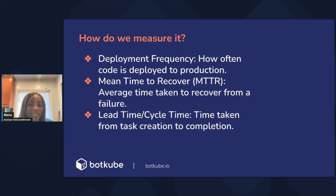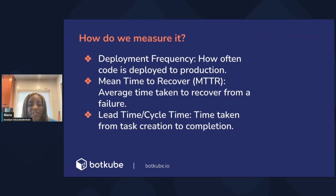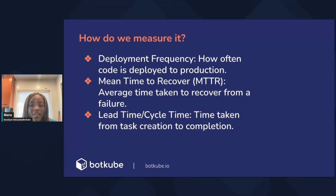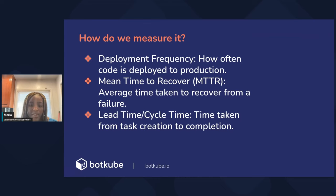If you're able to have faster releases, it typically means that you have a good CI/CD pipeline and process. Additionally, your mean time to recover is the average time it takes to recover from a failure or outage — a shorter mean time to recovery usually means your team is more resilient and reliable. And then lastly, your lead/cycle time: how much time it takes to go from the beginning of a task to completion, like measuring sprint cycles.